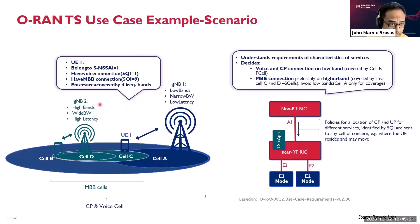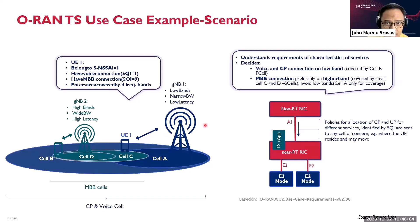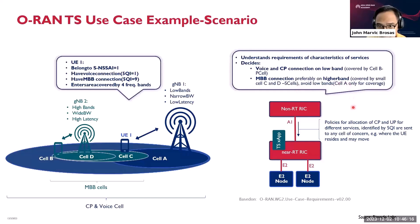Use case example: UE1 belongs to NSSA1 and has a voice connection with 5QI1 — a conversational call — and an MBB connection with 5QI9, which is broadband services. It enters an area covered by four frequency bands. You can see that this is the UE, and the policy decisions are here: the voice connection should be on low band, and the MBB connection should be on higher band. So you have two cells. If you're doing voice, you should use the low band. If you're using MBB — doing data — you need to use the higher band. These are all defined in the policy.